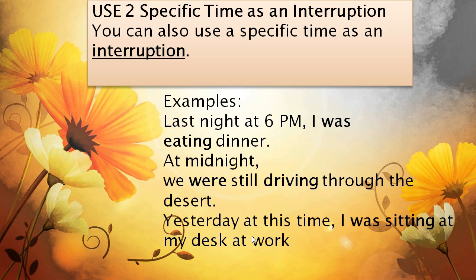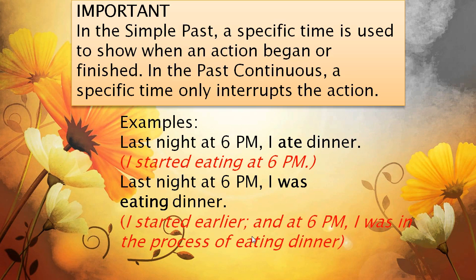You can also use a specific time as an interruption. Example: last night at 6 PM, I was eating dinner. It's a specific time — at 6 PM — but the action did not finish; you started to eat dinner but did not finish. At midnight we were still driving through the desert. Yesterday at this time, I was sitting at my desk at work. Important: in the simple past, a specific time shows when an action began or finished. In the past continuous, a specific time only interrupts the action. For example, 'last night at 6 PM I ate dinner' means I started eating at 6 PM, but 'last night at 6 PM I was eating dinner' means I started earlier and at 6 PM I was in the process of eating.